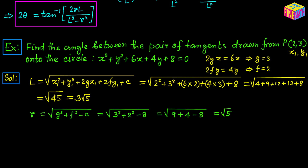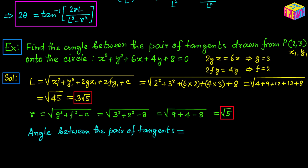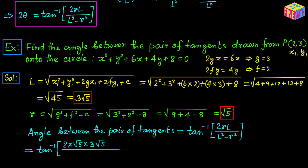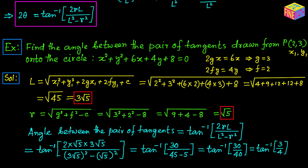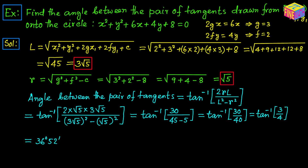Now let's plug these values into the formula for the angle between the pair of tangents: 2 theta equals tangent inverse of 2RL over L² minus R². Substituting R equals root 5 and L equals 3 root 5: numerator is 2 times root 5 times 3 root 5 equals 30; denominator is 45 minus 5 equals 40. So 2 theta equals tangent inverse of 30 over 40 equals tangent inverse of 3 over 4, which is approximately 36 degrees 52 minutes. That is the angle between the pair of tangents.